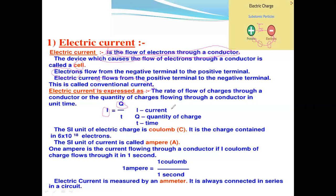The quantity of charges Q flowing through a conductor in a particular time — which may be in seconds, minutes, or hours — gives us the electric current I. The formula to find the electric current flowing through a conductor is I = Q/T.